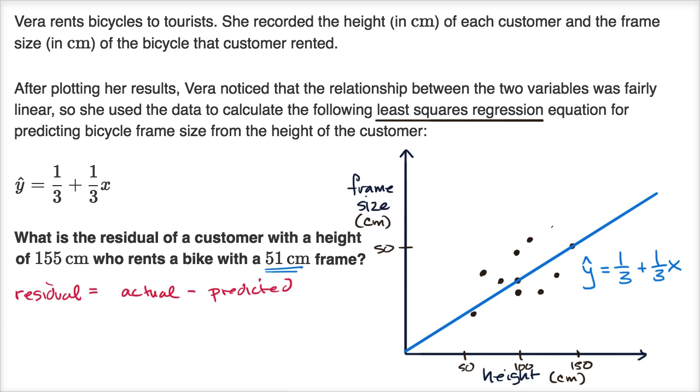Well we know the actual, they tell us that. They tell us that the 155 centimeter person rents a bike with a 51 centimeter frame. So this is 51 centimeters.